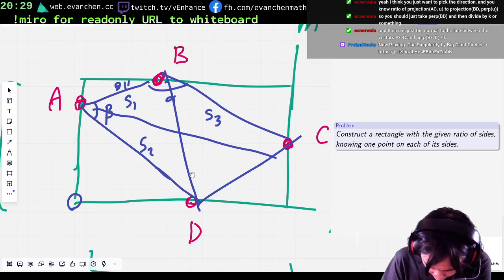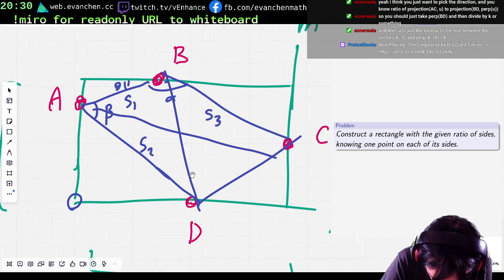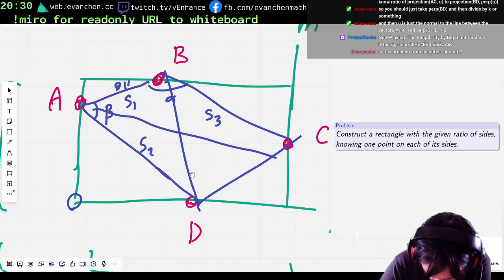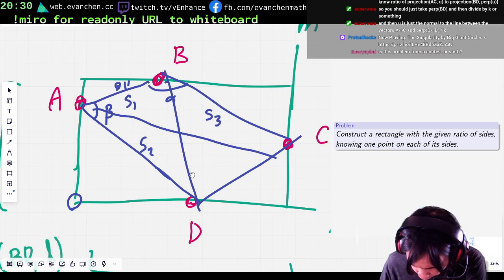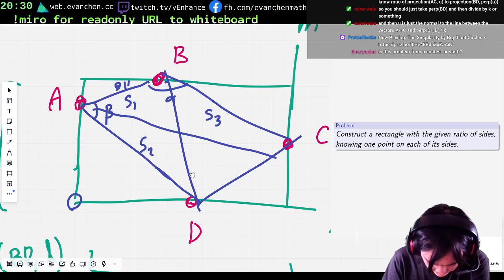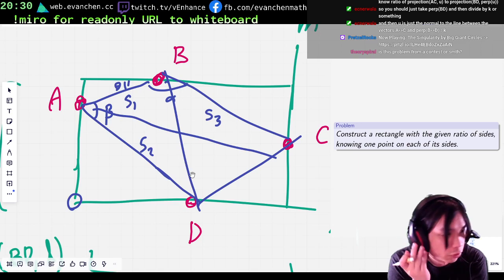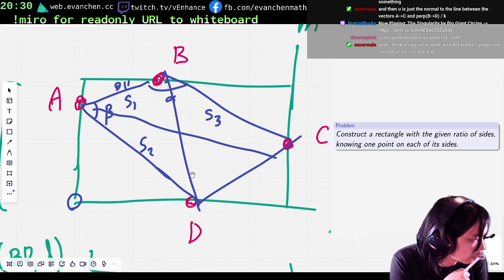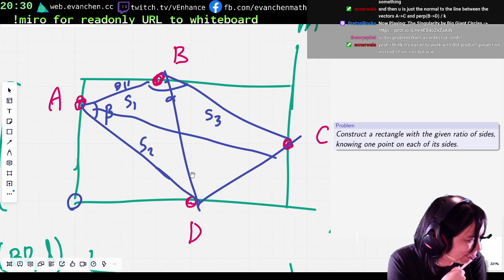And this length will be equal to AC times the cosine of the line AC to L. I should have... Whatever. So this is equal to BD times sine of BD over L or whatever. So, you know BD, you know AC. The ratio between them is... Is there a dot product projection? Yeah.